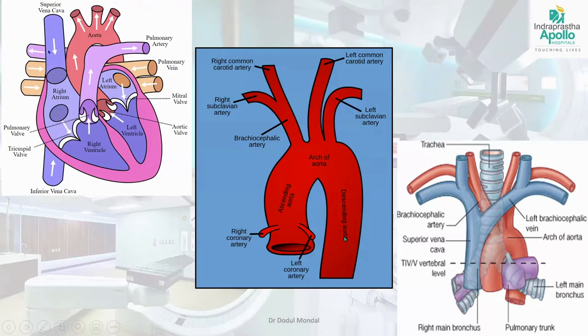In the right atrium, the superior vena cava drains from the upper part of the body and the inferior vena cava from the lower part. Within the left atrium, superior and inferior pulmonary veins drain from left and right sides. In the enlarged view of the arch of aorta, the right and left coronary arteries begin at the start of the aorta. The ascending aorta gives three branches: the brachiocephalic artery, which divides into right subclavian and right common carotid artery, the left common carotid artery, and the left subclavian artery. There is no left brachiocephalic artery.